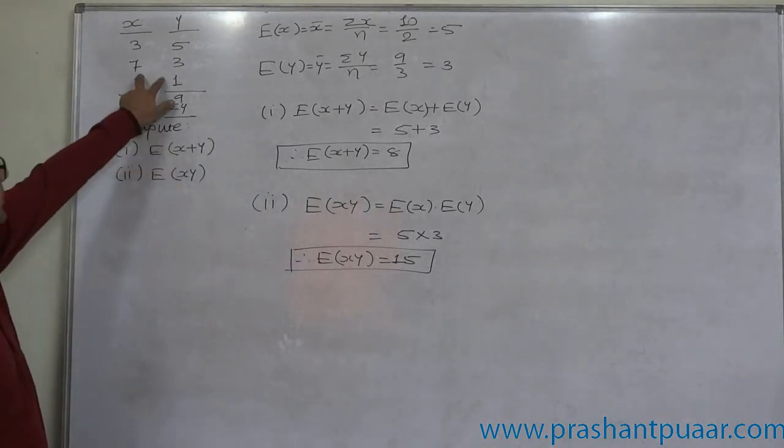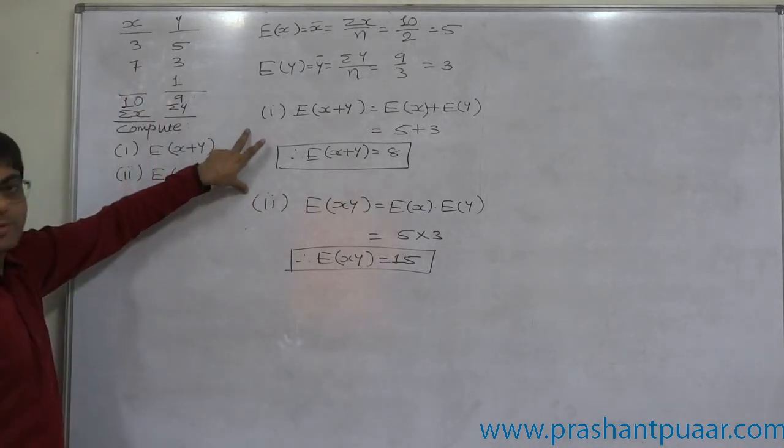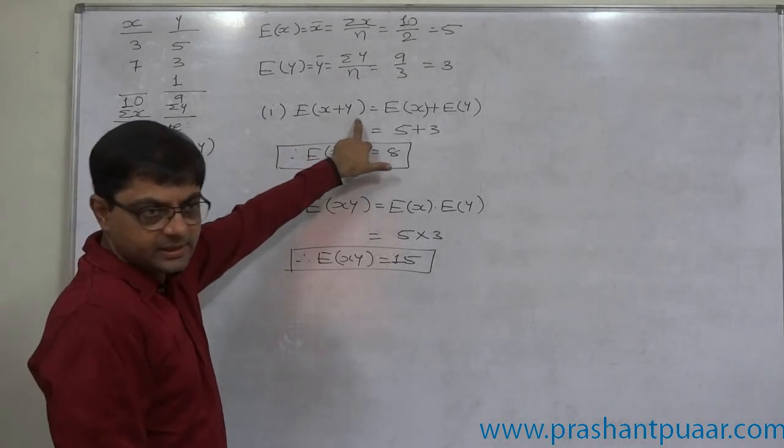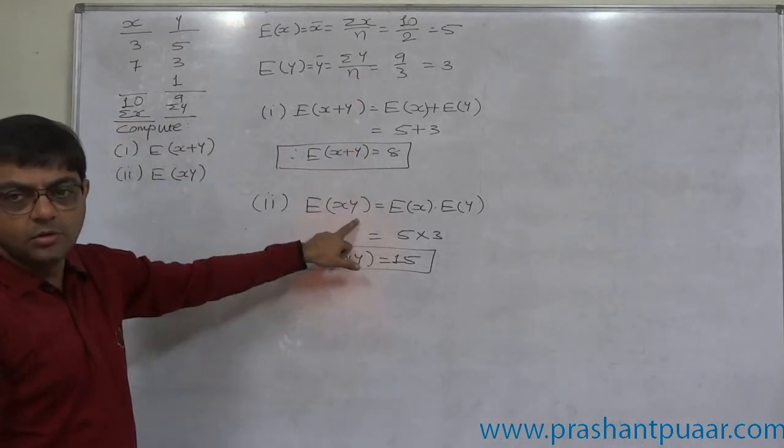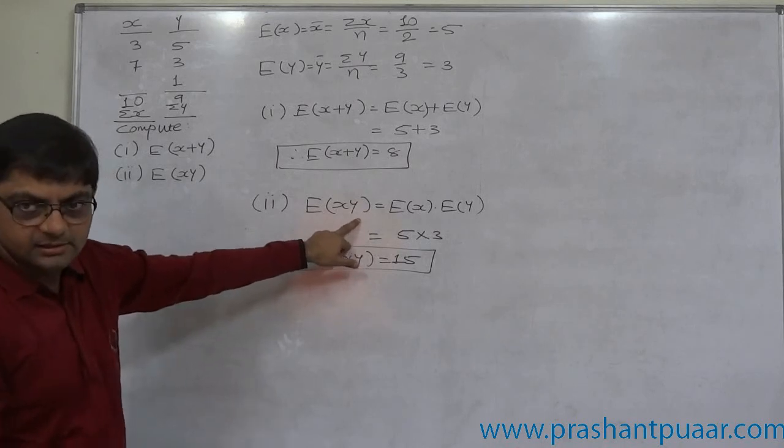If the data is made up of two independent variables, we have to use these two important properties. This is known as addition rule of mathematical expectation. And this is known as multiplication law or multiplication rule of mathematical expectation. Thank you.